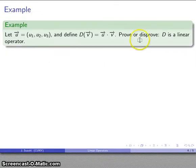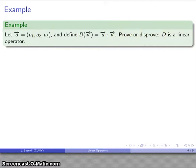Let's take an example. Let's take a vector u = (u₁, u₂, u₃), and I'll define a particular operator capital D. If I apply that to a vector v, it's going to be u dotted with whatever vector I have. We want to prove or disprove that D is a linear operator, so we'll check those requirements.